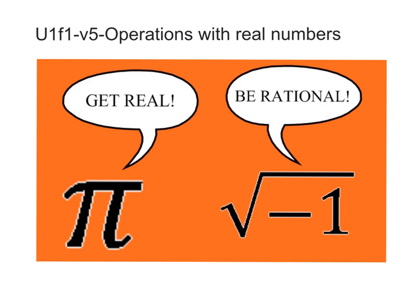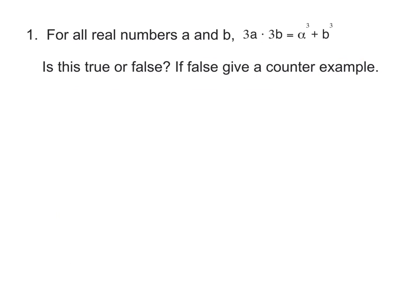This is our video on Unit 1 Formative 1 on Operations with Real Numbers. Our first problem here says for all real numbers a and b, 3a times 3b is equal to a to the third plus b to the third. Is this true or false? And if it's false, give a counterexample.